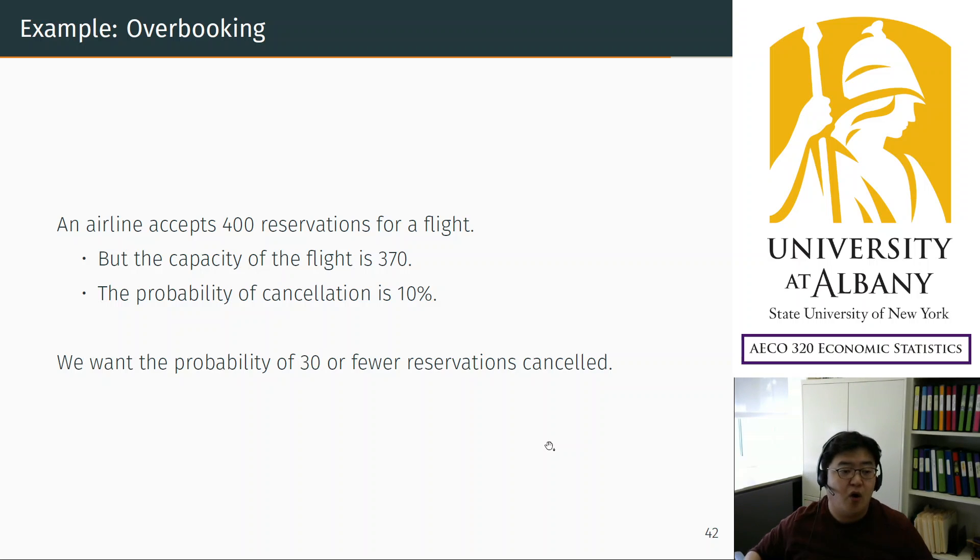So let's think about this example: overbooking. In a flight, 400 people made reservations for the same flight. But actually the flight has only 370 seats. Only 370 passengers can take that flight. And as before, we assume the probability of cancellation is 10% and cancellation is independent across reservations. Everything is the same.